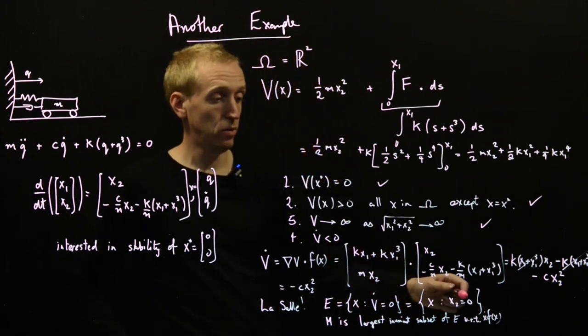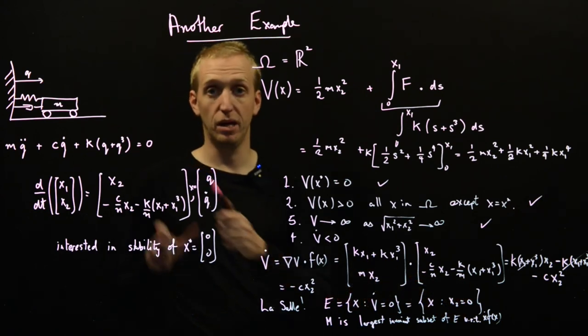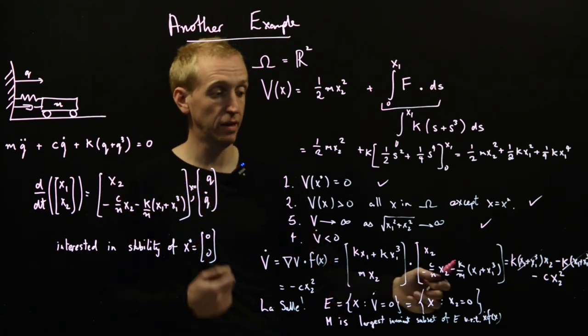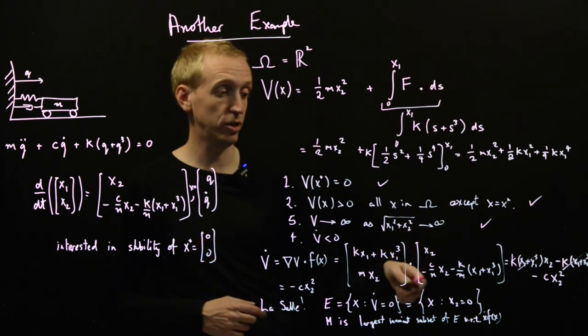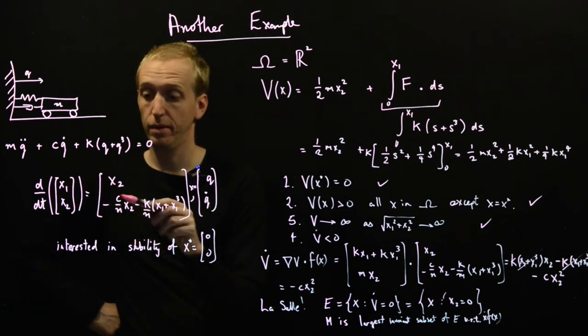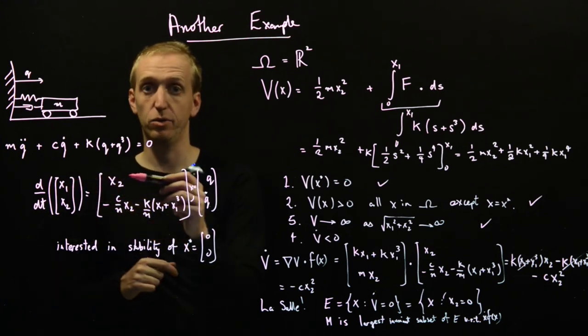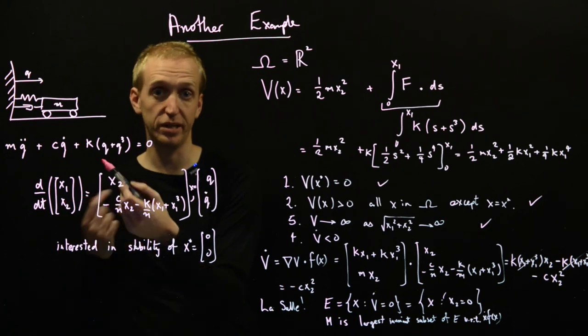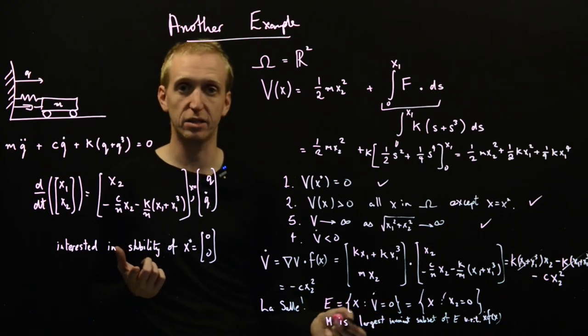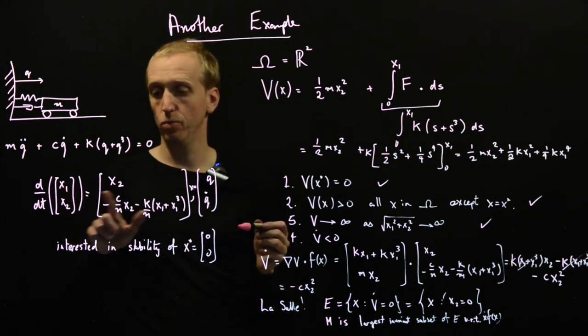So how do we proceed? Well, we look at our set E and we make some conclusions based on our dynamics about what M must be. And it's going to follow exactly the same pattern as last time actually. Since x2 is equal to zero, x1 dot is equal to zero, and also x2 dot is equal to zero. x1 dot is equal to zero because x2 is zero and we get it from this equation. x2 dot is equal to zero because otherwise x2 would be changing. And if x2 is changing, it will leave the set E. And so it won't be in this largest invariant subset M. So we know x1 dot is zero, so we know x1 is a constant, and we know x2 dot is equal to zero.